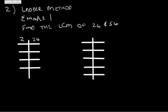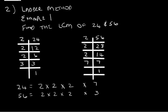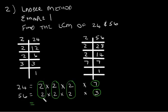Now using the ladder method, let's find the LCM of 24 and 56. We've only divided by prime numbers, and we should have 24 equal to 2 times 2 times 2 times 3, and 56 equal to 2 times 2 times 2 times 7. We need to circle the pairs just like before, but there's an additional step. We've paired up the 2s, but we see there are singles as well. If there is a pair, we only write it down once. And we also include the singles — the 3 and the 7.